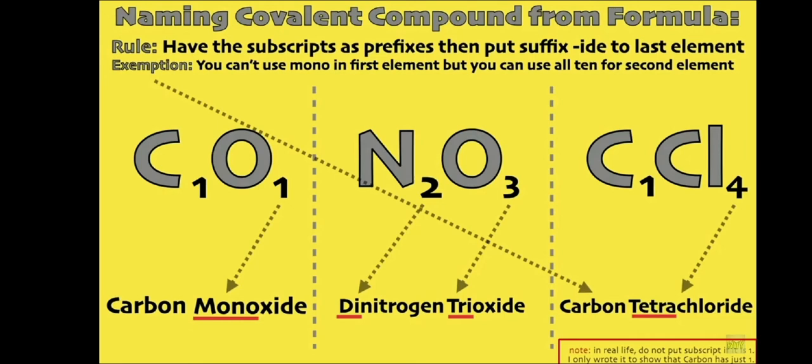If you are given the chemical formula and asked to name the compound, you get the subscript of the 2 atoms and put that as prefixes before each element. Make note that in the first element, we can put any prefix except for mono. And for the second element, we can put any prefix we need. After putting the prefixes, the last element gets the suffix -ide. Let's have CO as an example. We know that if there is no subscript, it is automatically 1. Mono can't be used for the first element. So in CO, we put carbon as it is and then the prefix mono for the oxygen with the suffix -ide to become carbon monoxide. Another example, we have N2O3. Nitrogen has 2, so it becomes dinitrogen. And oxygen has 3, so it becomes trioxide. But we add the suffix -ide, so the whole compound is dinitrogen trioxide. Let's have a third example with CCl4. Carbon remains as it is and chlorine has the subscript 4, we put the prefix tetra and then the suffix -ide to chlorine, so the whole compound becomes carbon tetrachloride.